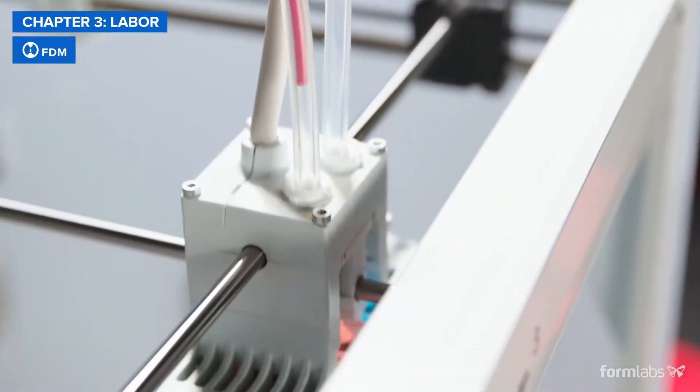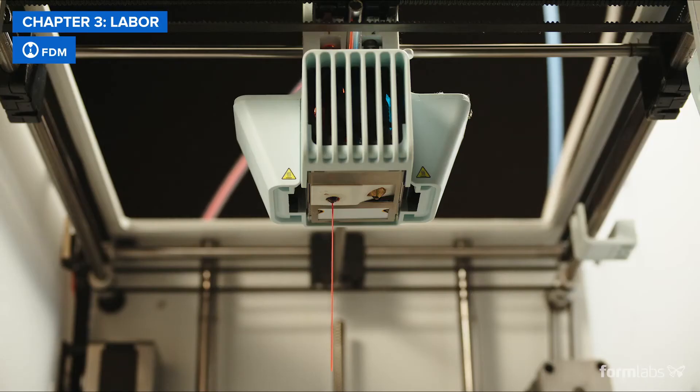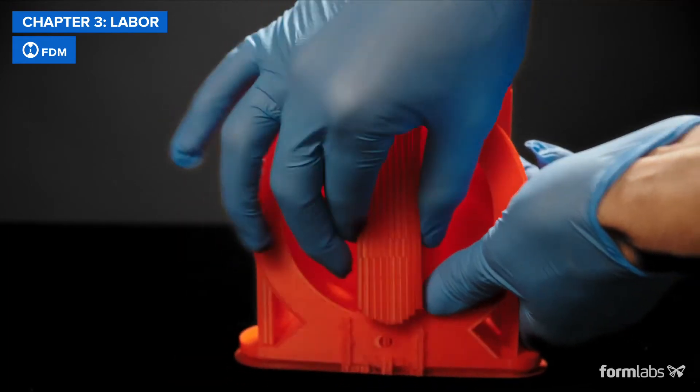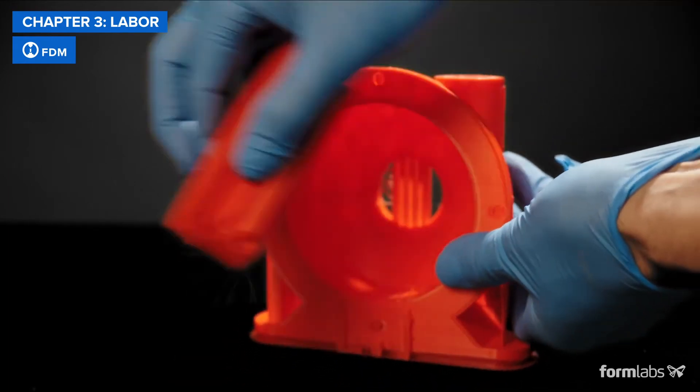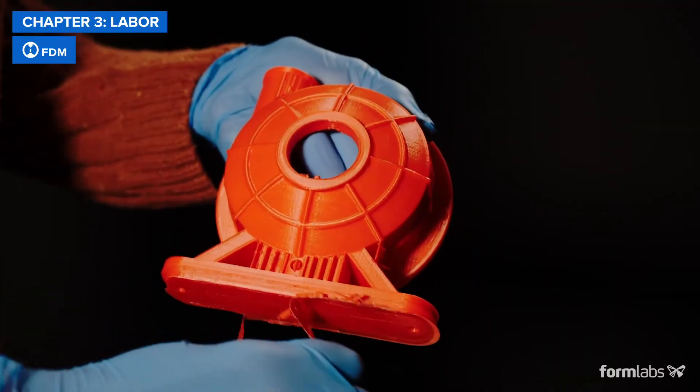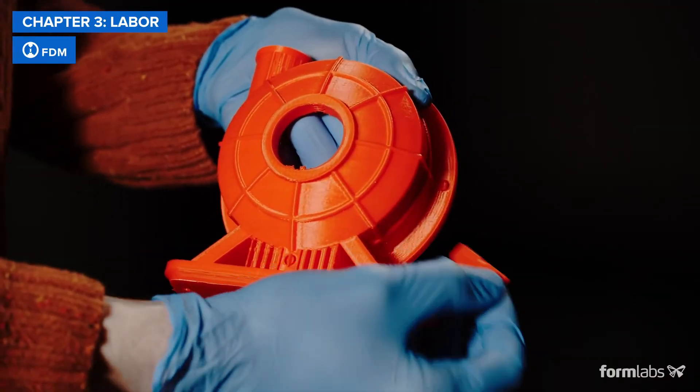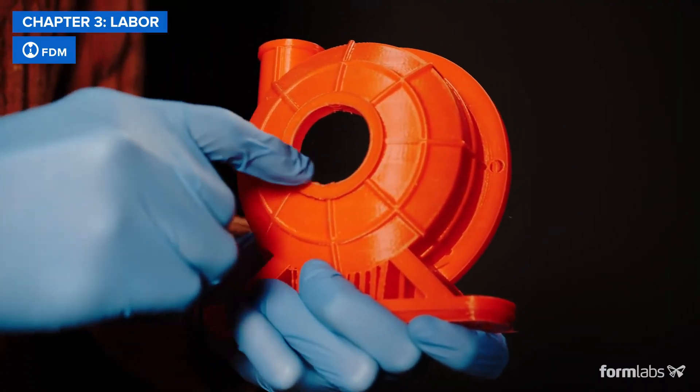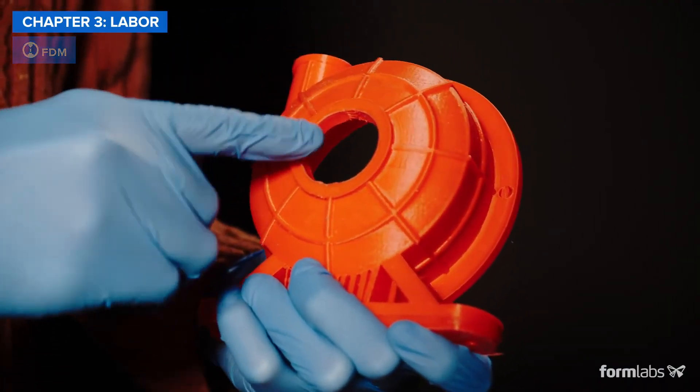In most cases, setting up and maintaining FDM printers is fairly easy. Post-processing parts can be fast too, but only for simple parts and rough prototypes. Complex parts require support structures that either break away or need to be dissolved in water or using chemicals. Achieving a better surface quality often requires lengthy manual sanding and finishing.